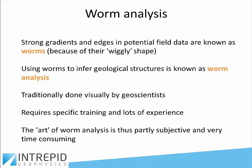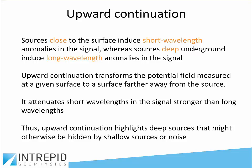Worm analysis. Strong gradients and edges in potential field data are known as worms because of their wriggly shape. We use these worms to help locate and infer buried geological structures — a process called worm analysis. This has been done traditionally for many years by geoscientists. It requires specific training and lots of experience. If you have some knowledge of the geology of the area and you see a worm map, you can rapidly figure out what features are showing up. The art of worm analysis is thus partly subjective and it can be time consuming.